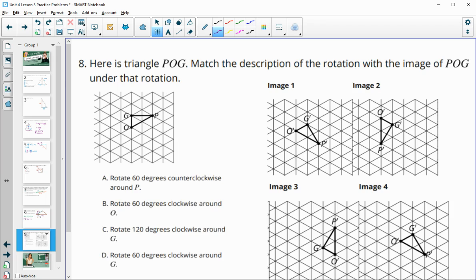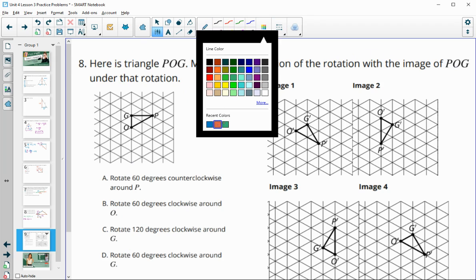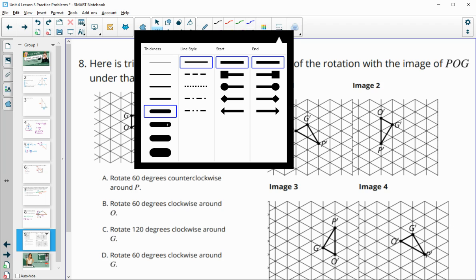And then this final problem here is saying that we've got this triangle POG. Match the description of the rotations under each of these rotations.